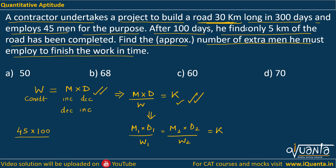In the first case, the number of men employed was 45, they were working for 100 days, and they could complete only 5 kilometers of the road. In the second case, the number of men has to be increased. Let us assume the total men employed to build the remaining road is x. Since 5 kilometers has been built and we had to build 30 kilometers, 25 kilometers remain. Since 100 days have been consumed and we initially wanted to complete the work in 300 days, 200 days are still remaining.